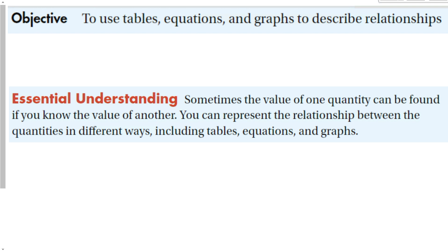Our essential understanding is that sometimes the value of one quantity can be found if you know the value of another. You can represent the relationships between quantities in different ways, including tables, equations, and graphs.